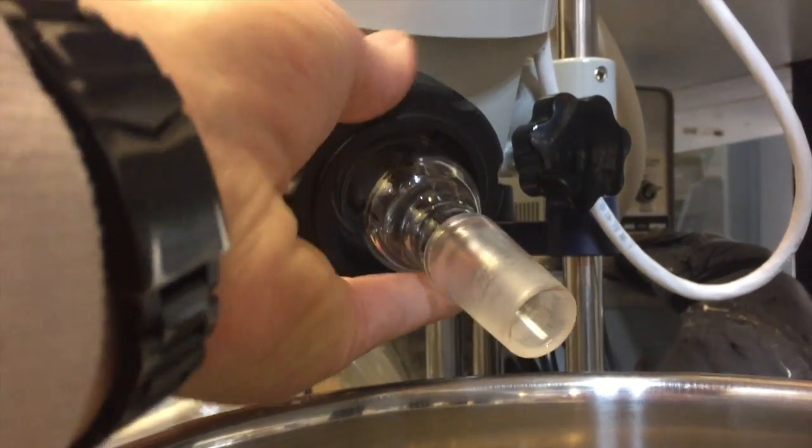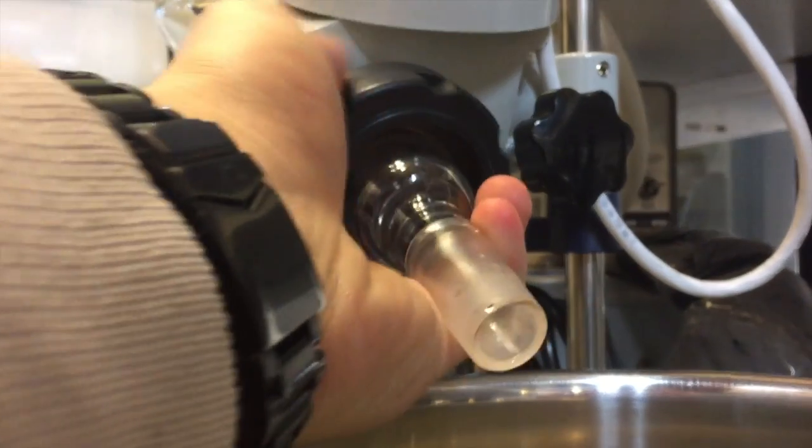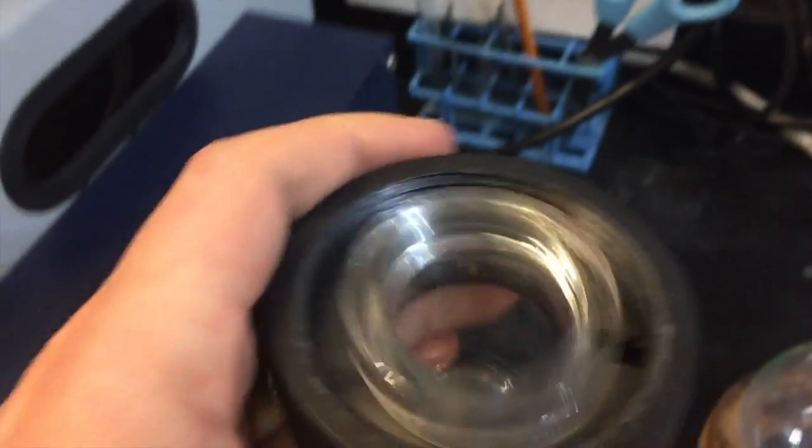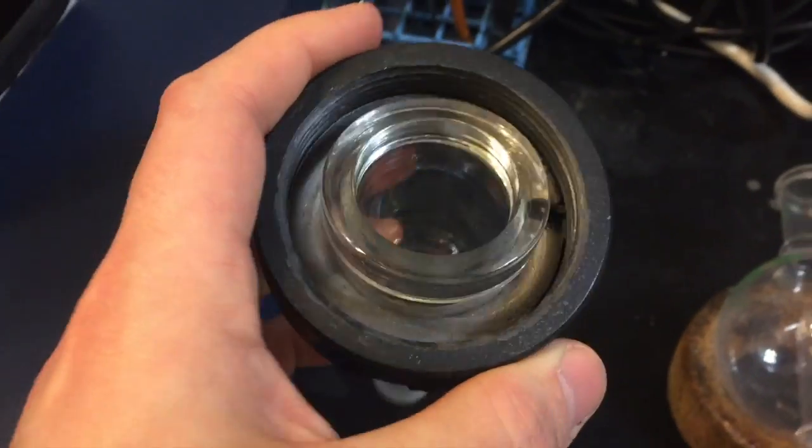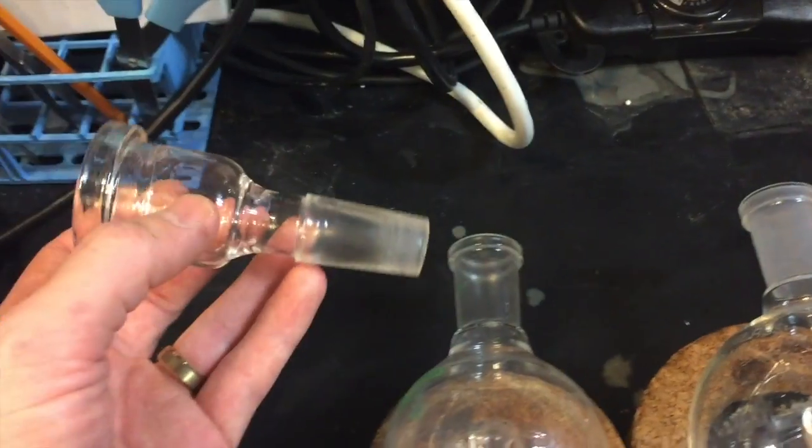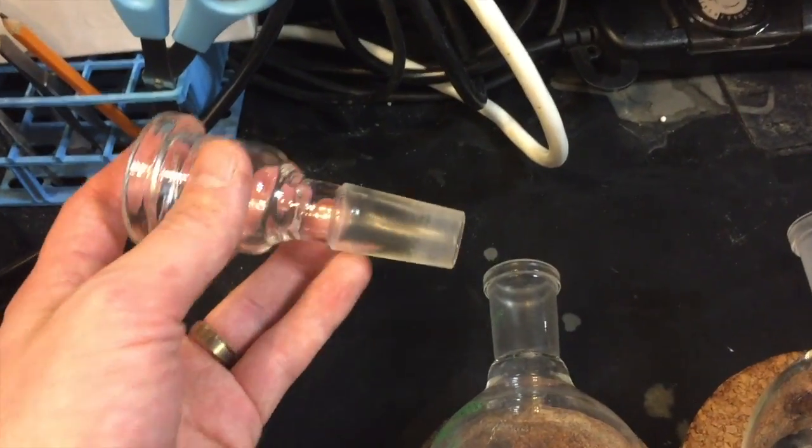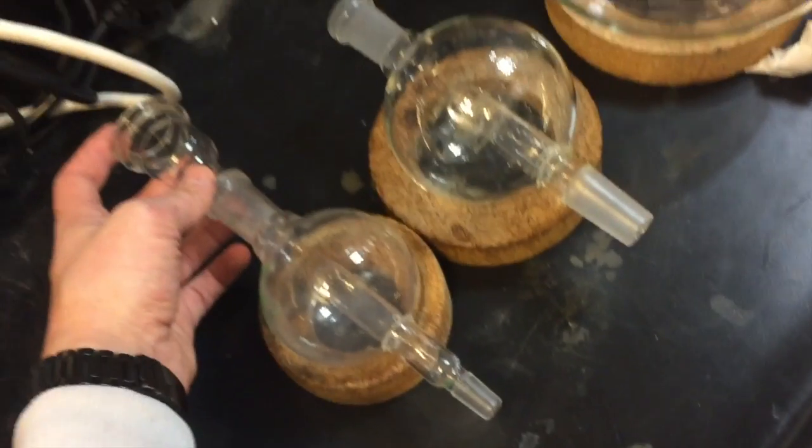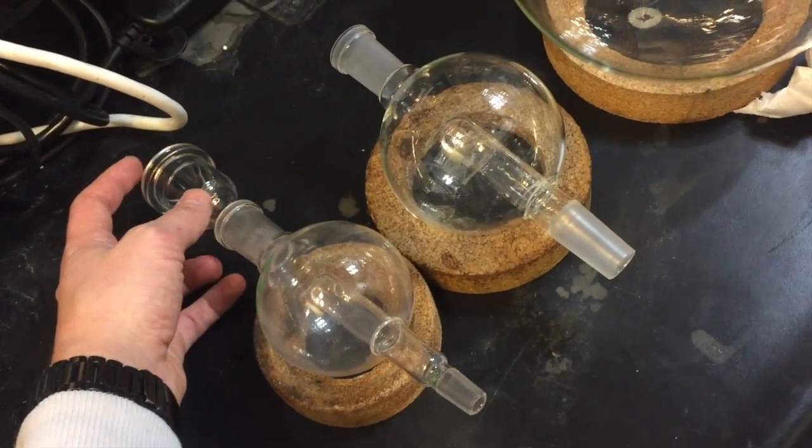This is actually an adapter I purchased for the instrument. The screw cap you see here comes standard with the instrument, but I needed 24/40 ground glass adapters. This, what you see here, is the actual glass shape that fits the instrument. But I wanted to be able to hook on bump traps of various sizes and things like that.